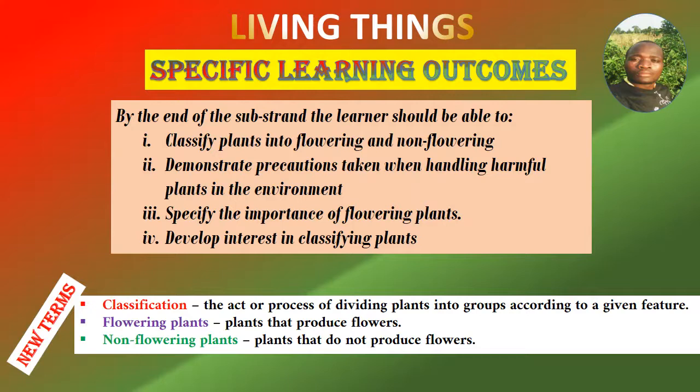The new terms are: Classification — the actual process of dividing plants into groups according to a given feature. Flowering plants — those are plants that produce flowers. Non-flowering plants — those are plants that do not produce flowers.